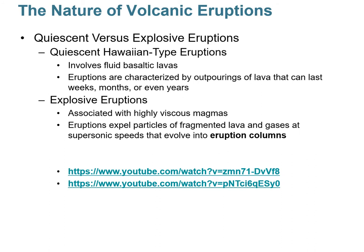There are two types of eruptions. First are quiescent Hawaiian-type eruptions where very fluid basaltic lava pours out onto the landscape, inundating entire areas with fast-moving basaltic lava that solidifies into rock. These eruptions can last up to years. The second type is very violent explosive eruptions associated with higher viscosity, higher silica magmas, where volcanic fragments are ejected from the vent at really high speeds.